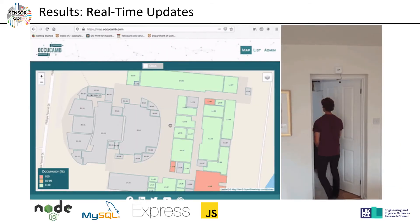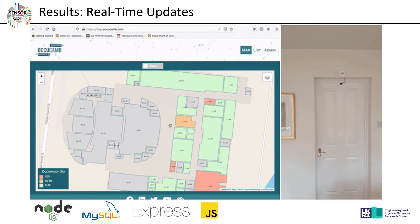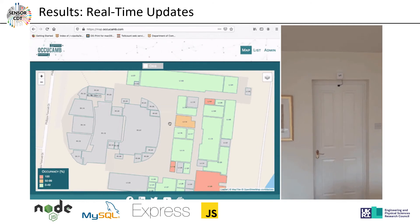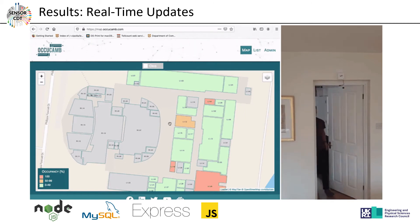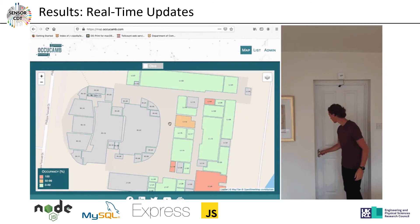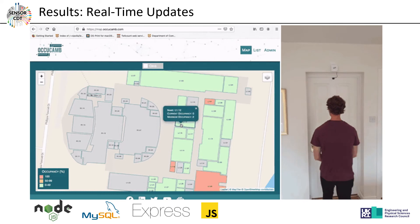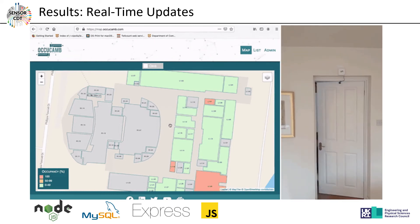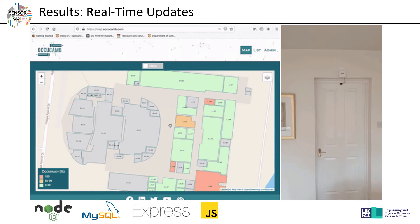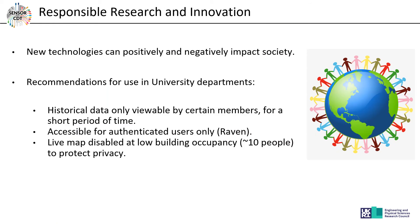This is what our sensor looks like — the box on the right. The live map, developed from scratch, shows rooms changing color as occupancy increases when a researcher enters, and updates live when they leave. The number turns green to indicate the change. This map was developed using Node.js, MySQL, Express, and JavaScript. We have shown that the system is 70% accurate.